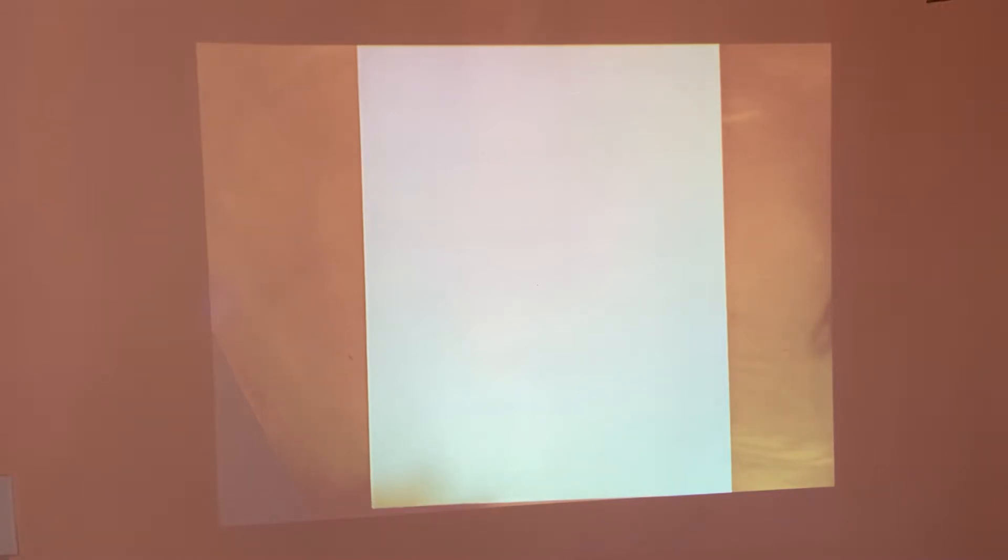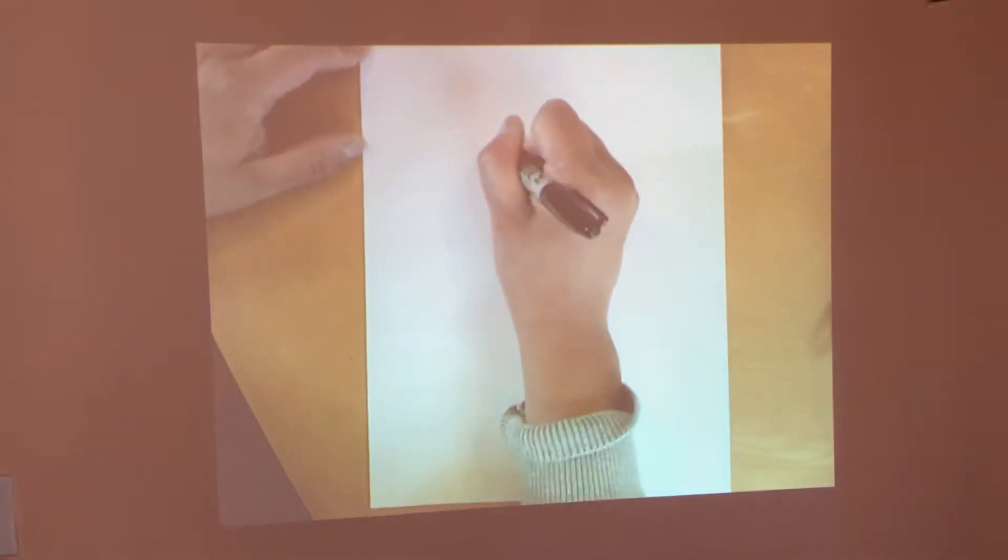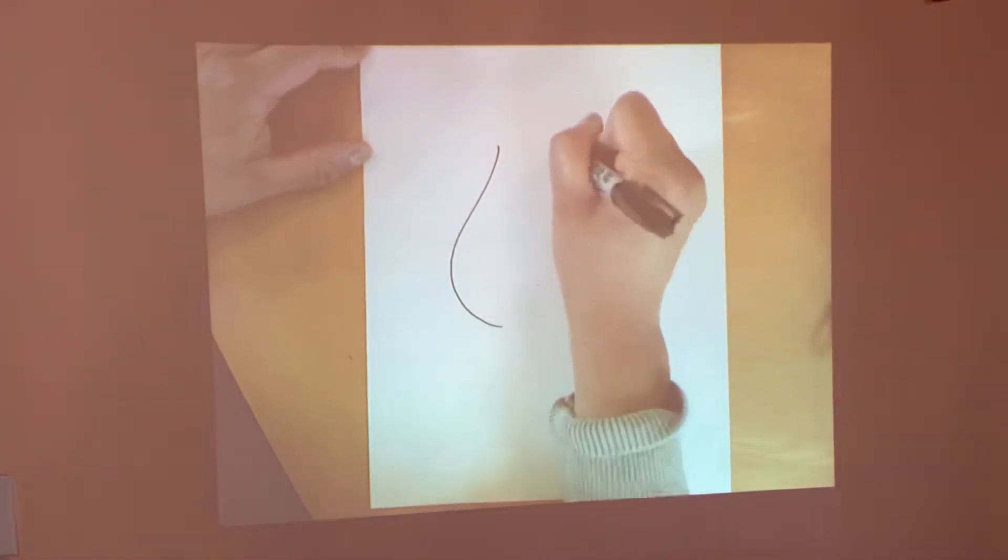All right, the first thing we will need to draw is going to be the onion. So, let's draw the shape of the onion. Draw one curved line like this. Okay, I'm using a brand new sharpie. It's always so nice. And draw another curved line like this.